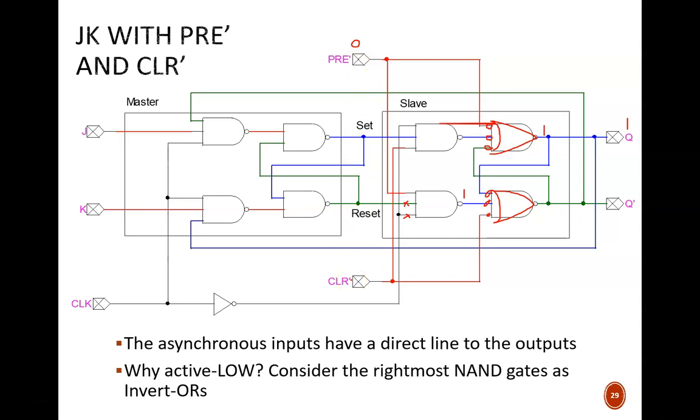Remember that these flip-flops should never have both preset and clear activated at the same time. What would happen? As you can see in the schematic, both Q and Q' would equal 1. That doesn't break the circuit, but it doesn't make any logical sense.